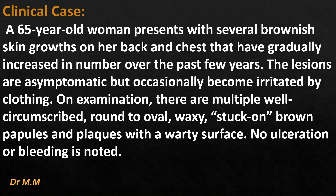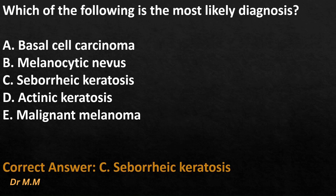Clinical case: a 65-year-old woman presents with several brownish skin growths on her back and chest that have gradually increased in number over the past few years. The lesions are asymptomatic but occasionally become irritated by clothing. On examination, there are multiple well-circumscribed, round to oval, waxy stuck-on brown papules and plaques with a warty surface. No ulceration or bleeding is noted. Which of the following is the most likely diagnosis? A) basal cell carcinoma, B) melanocytic nevus, C) seborrheic keratosis, D) actinic keratosis, E) malignant melanoma.